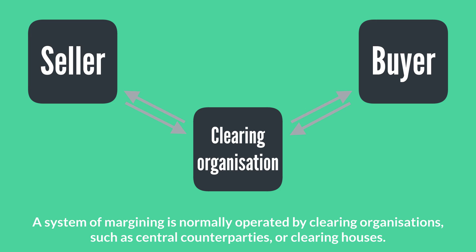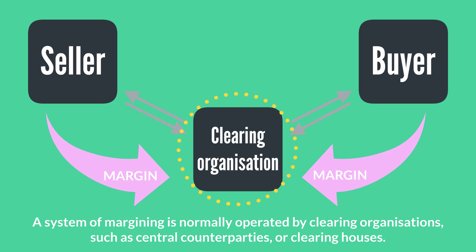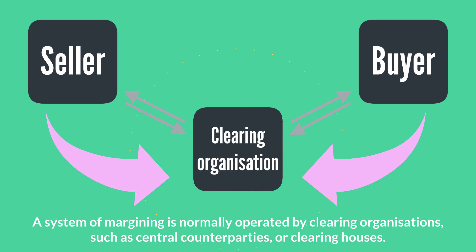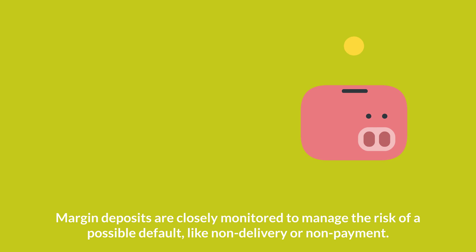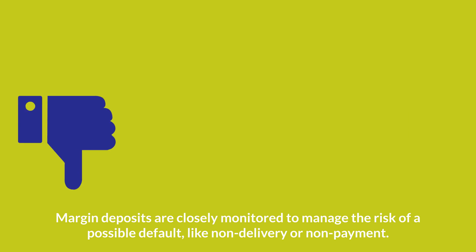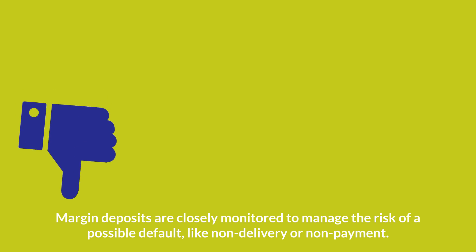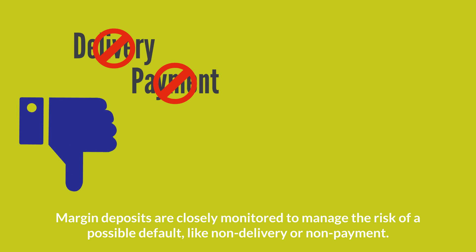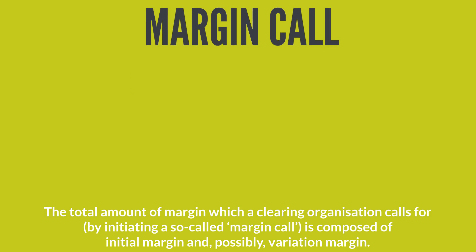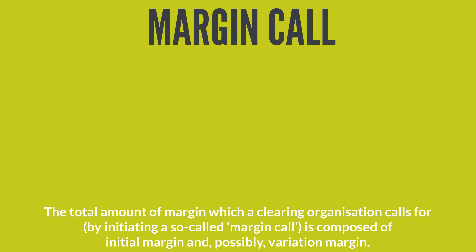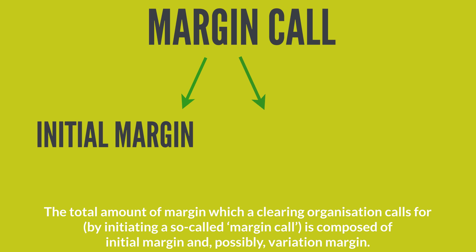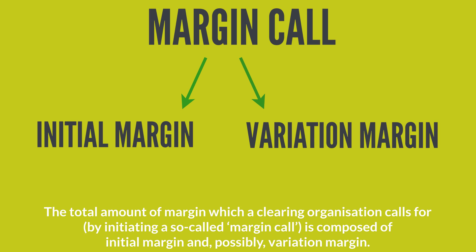A system of margining is normally operated by clearing organisations, such as central counterparties or clearing houses. Margin deposits are closely monitored to manage the risk of a possible default, like non-delivery or non-payment. The total amount of margin which a clearing organisation calls for is composed of initial margin and possibly variation margin.